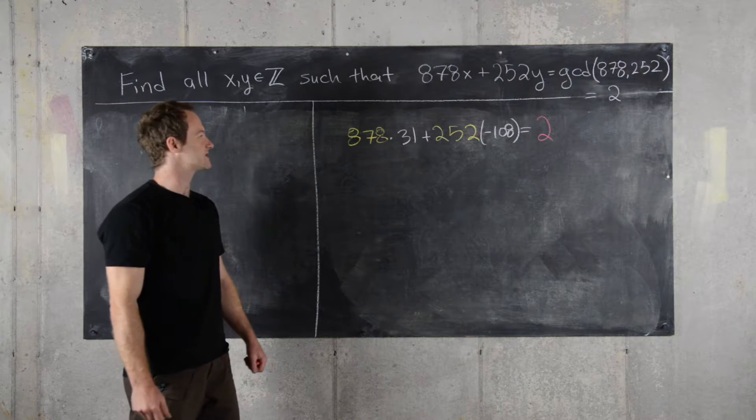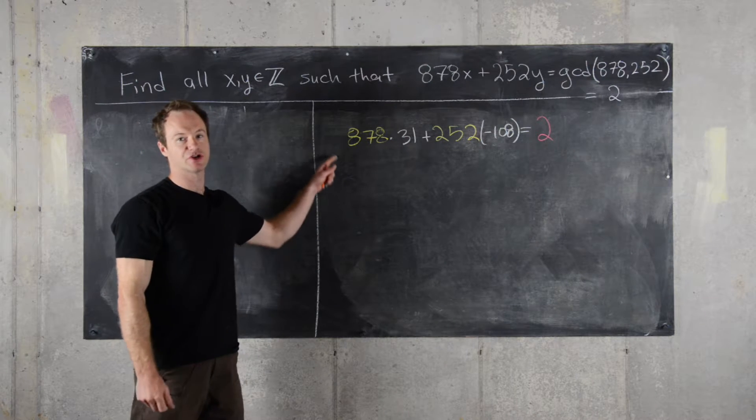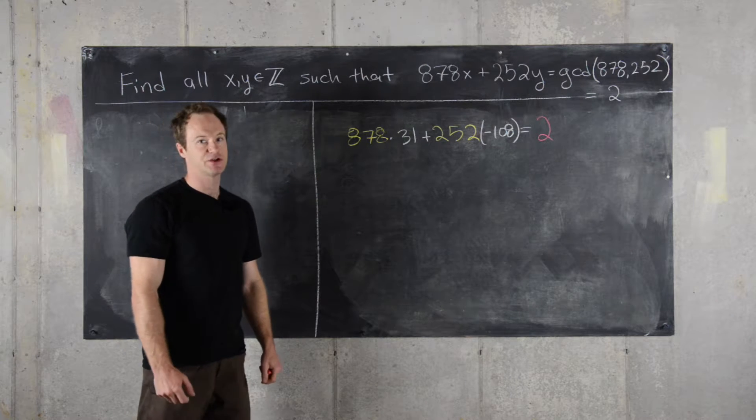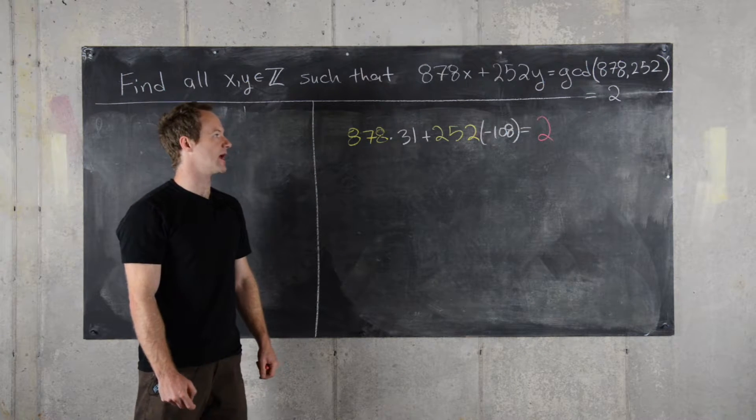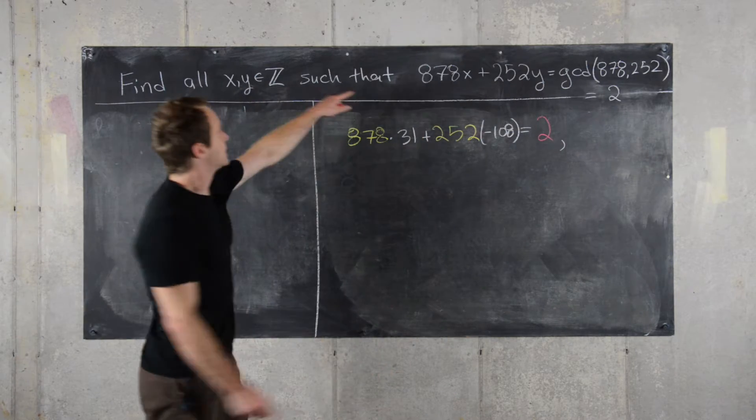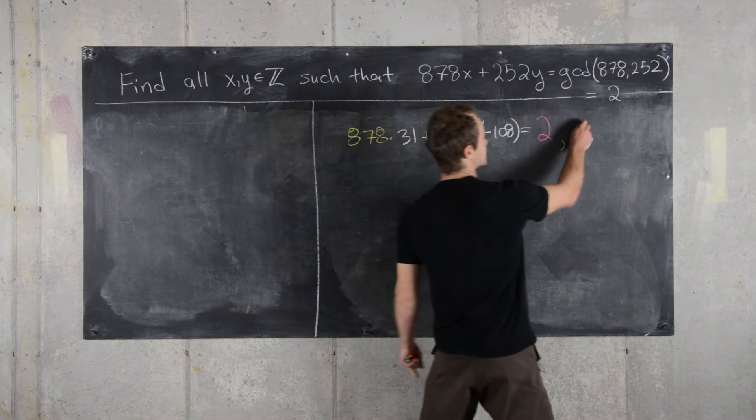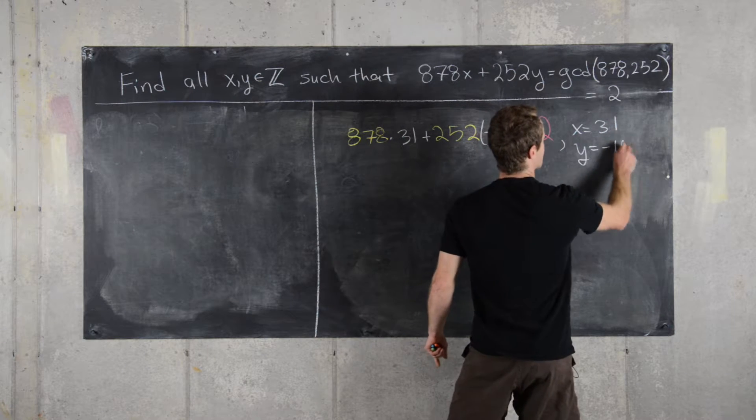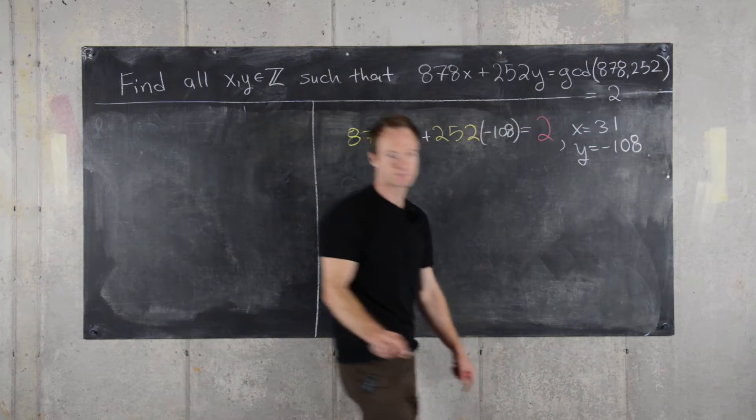So in the previous step, we ended in an equation which we can combine like terms to get 878 times 31 plus 252 times negative 108 equals 2. So that means we have solved this equation with x equals 31 and y equals negative 108.